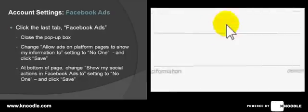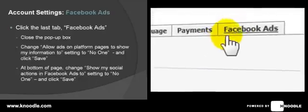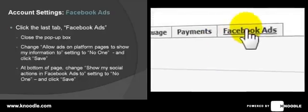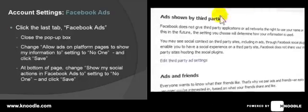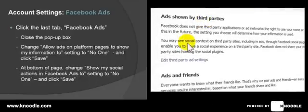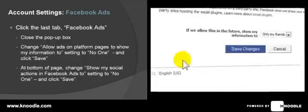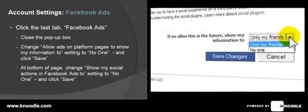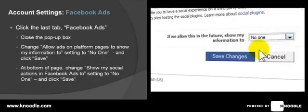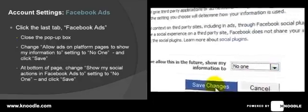Now go up to the tabs at the top and click on 'Facebook Ads.' Under 'Ads Shown by Third Parties,' click on the link, then click the drop-down box and change that to 'No One.' Click 'Save Changes.'